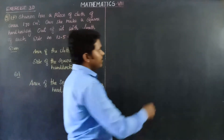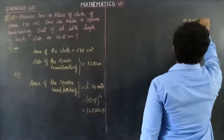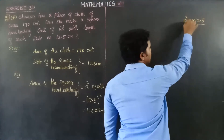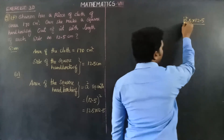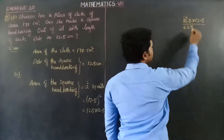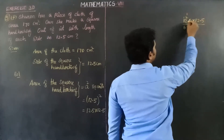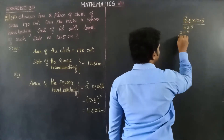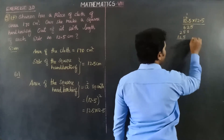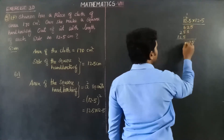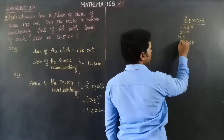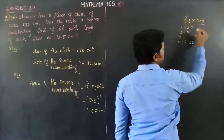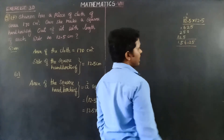So we multiply 12.5 into 12.5. 5 fives are 25, remaining 2. 5 twos are 10, 10 plus 2 is 12, remaining 1. 5 ones are 5, 5 plus 1 is 6. Remaining 1. 2 twos are 4, 4 plus 1 is 5. 2 ones are 2. One number is 125. After placing the decimal, 5 plus 5 is 10, 10 plus 6 is 16, remaining 1. 2 plus 2 is 4, 4 plus 1 is 5. So the result is 156.25.